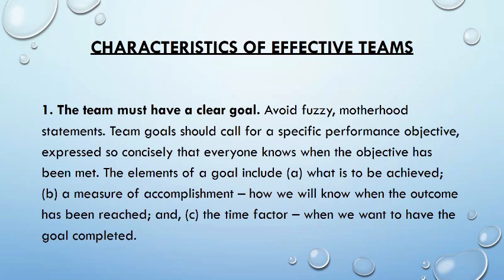Avoid fuzzy motherhood statements. Team goals should call for a specific performance objective expressed so concisely that everyone knows when the objective has been met. The elements of a goal include: A, what is to be achieved; B, a measure of accomplishment — how we will know when the outcome has been reached; and C, the time factor — when we want to have the goal completed.